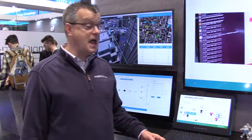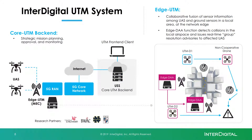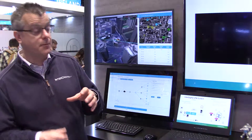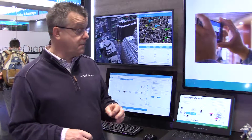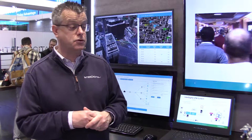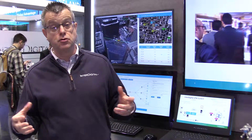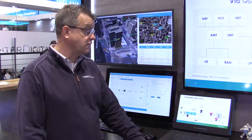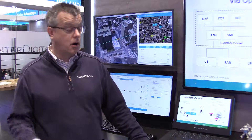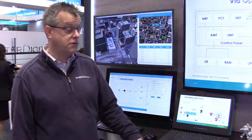We also have an edge component — edge UTM. This is an edge application deployed very close to where the drones are operating in the city. It performs collaborative fusion of sensor information: telemetry data reported by the drones, obstacle information the drones are seeing, data from uncontrolled objects, and also ground sensors such as radar or lidar.